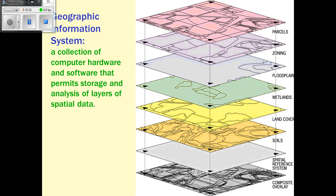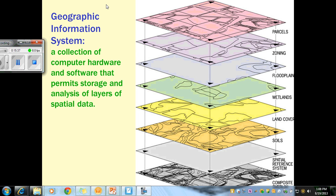Geographic Information Systems, or GIS, use thematic maps and layer them together. You might have a layer with parcels, zones, floodplains, and wetlands. By looking at multiple themes together, you can see the best place to locate something. GIS is often used by urban planners to decide where the best place to put or build something is.